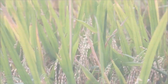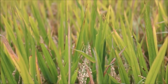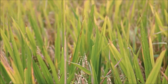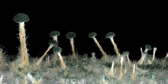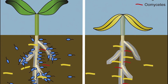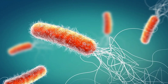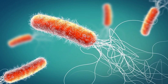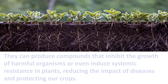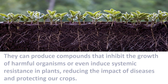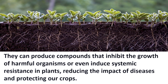Disease Suppression: Microorganisms can be our allies in the fight against plant diseases. Certain fungi and bacteria colonize plant roots or the surrounding soil, effectively competing with pathogens for resources. They can produce compounds that inhibit the growth of harmful organisms, or even induce systemic resistance in plants, reducing the impact of diseases and protecting our crops.